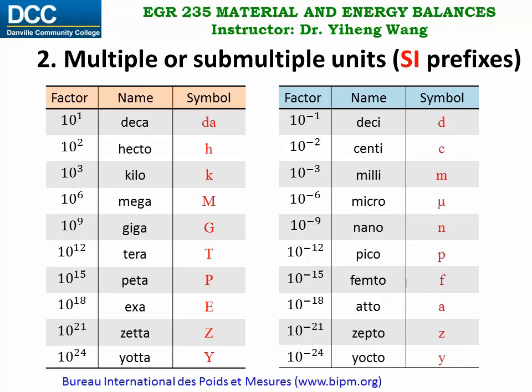Also, prefixes cannot be added together. For example, for a million meters, you should not say one kilo kilometer — it should be one megameter.